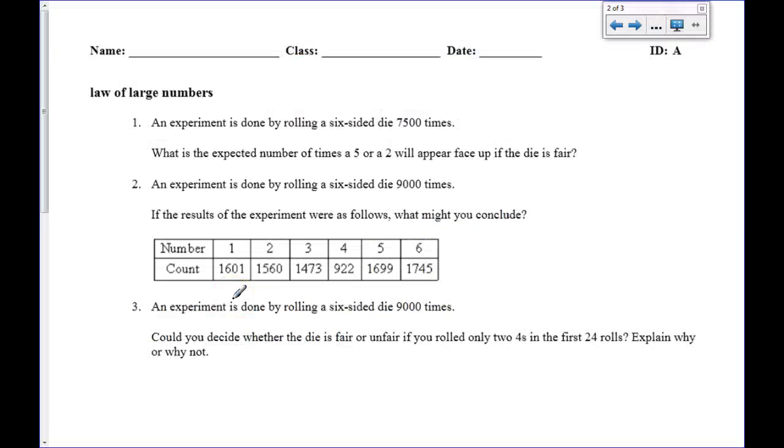In the first problem, there is a dice that is rolled 7,500 times. And it says what is the expected number of times that a 5 or a 2 will appear face up if the die is fair.